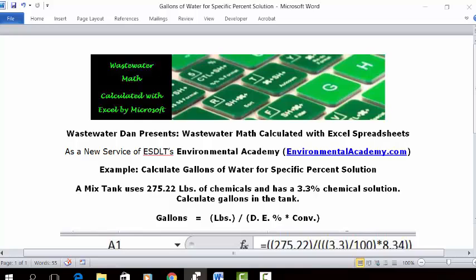Today's example: calculate gallons of water for specific percent solution. The problem reads: a mix tank uses 275.22 pounds of chemicals and has a 3.3% chemical solution. Calculate gallons in the tank.